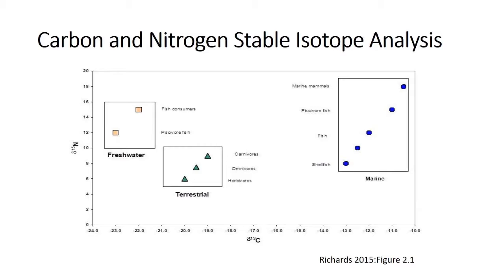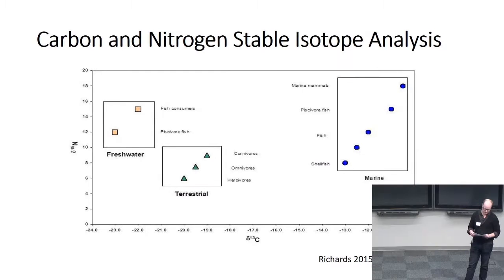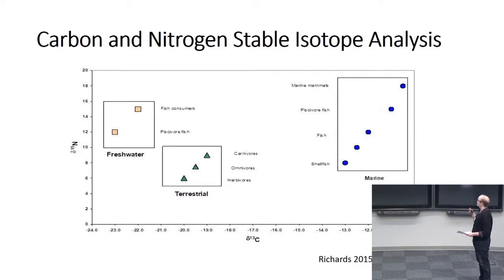I'd like to quickly introduce stable isotope analysis, which archaeologists use to gain a general sense of diet at sites. It involves the measurement of the isotope composition of human bone collagen, which is reflective of the dietary protein consumed from plants and animals. The figure included provides a very broad categorization of consumer groups based on their stable isotope measurements.